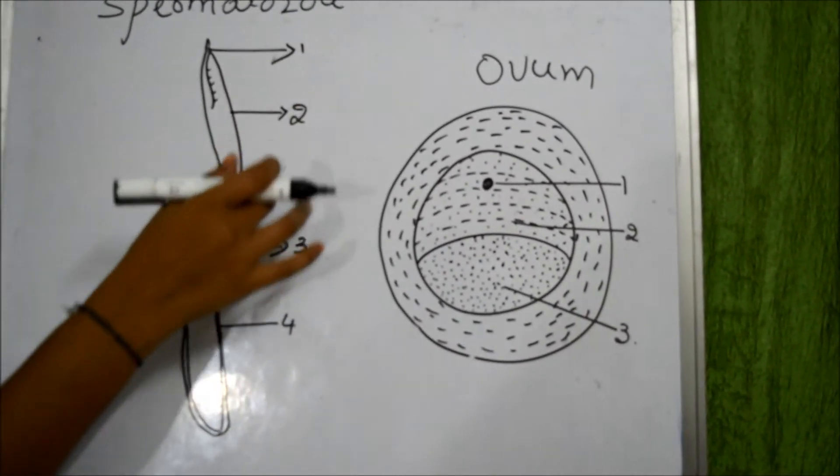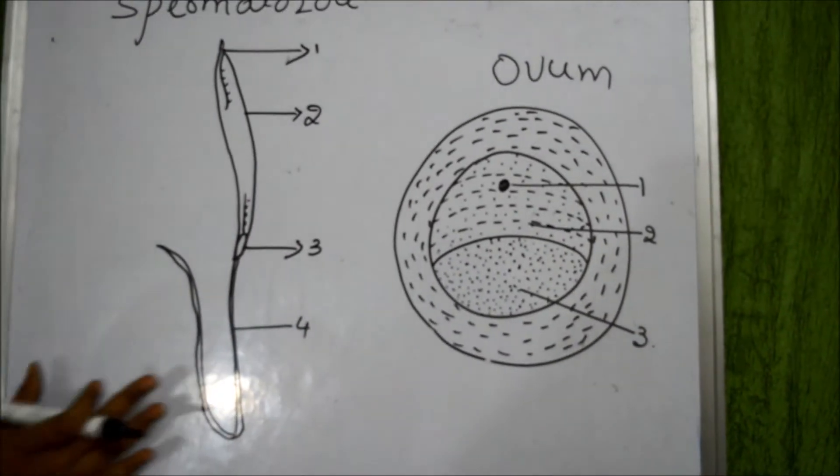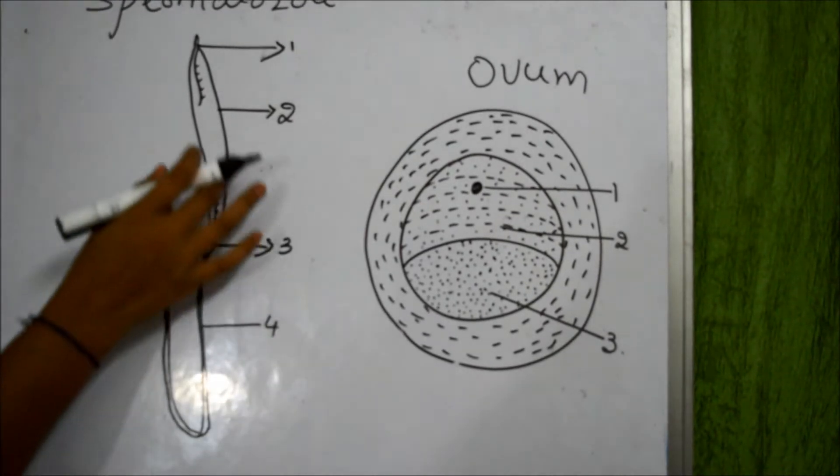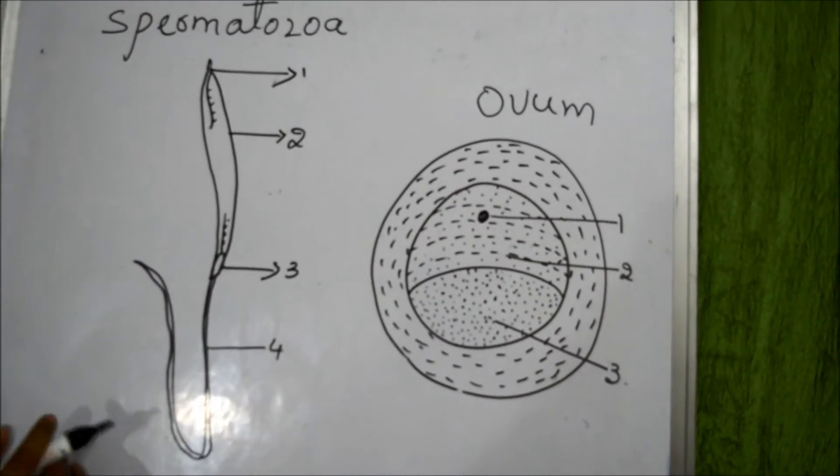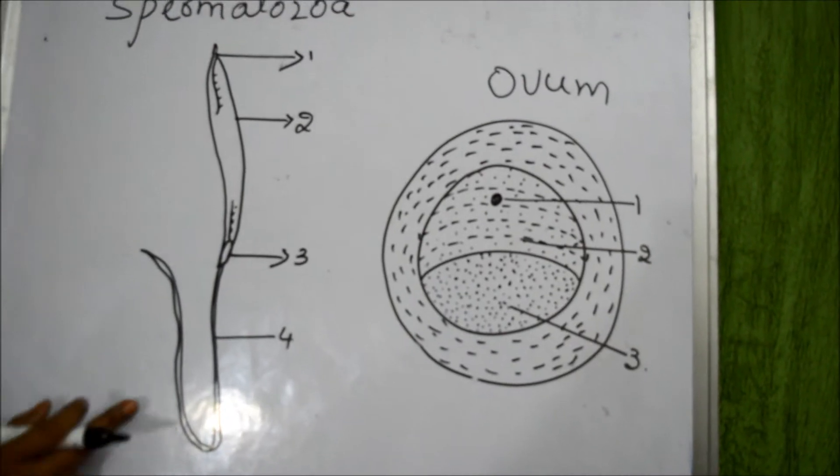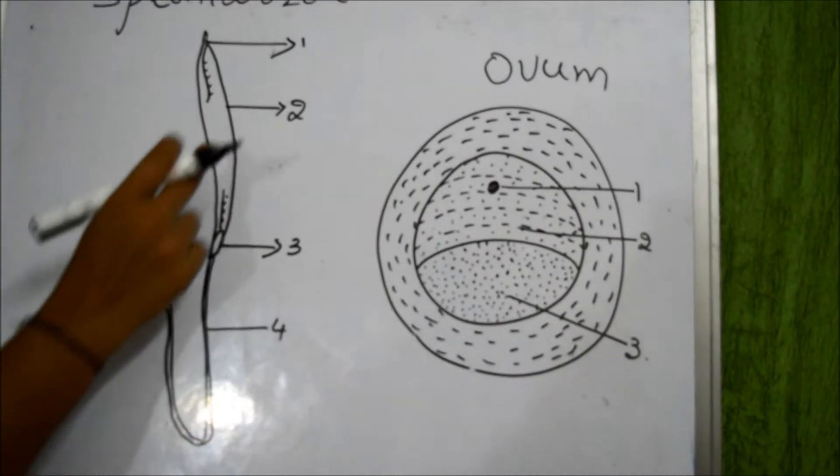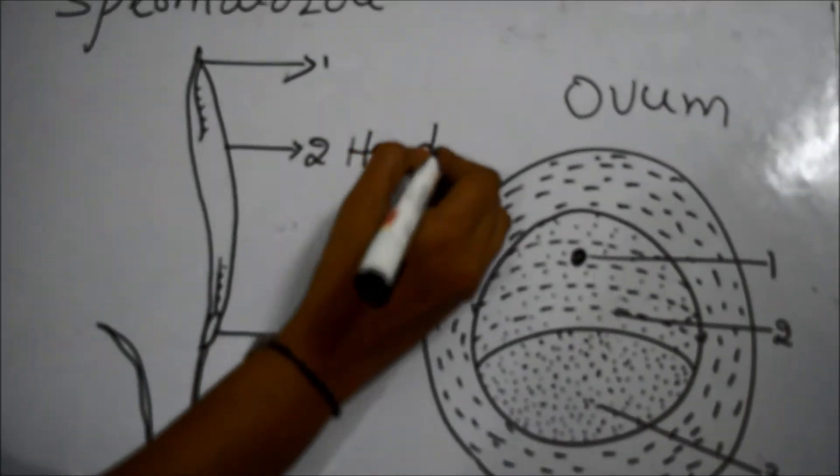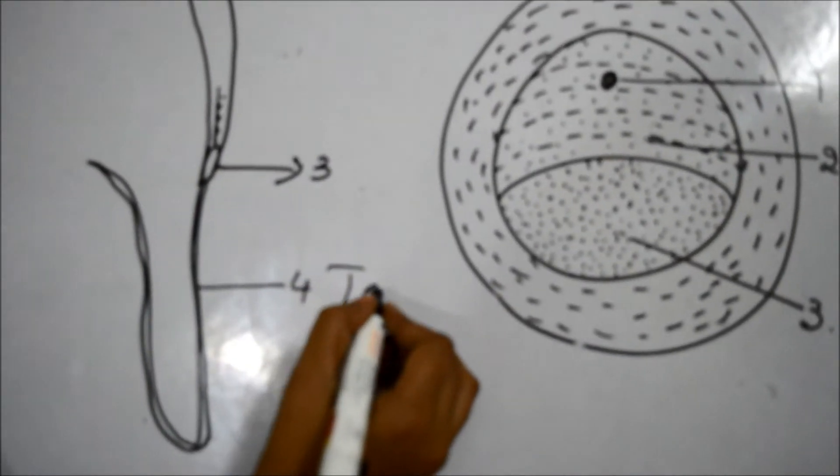It consists of mainly four parts. The spermatozoa, see this is the spermatozoa, are microscopic and motile cells. They are produced in the testis of male. Each spermatozoa has a head, this part we can call as head, and tail, and this one is tail.